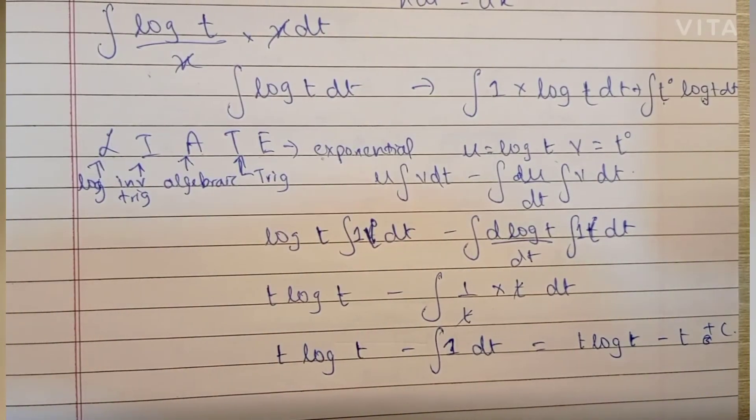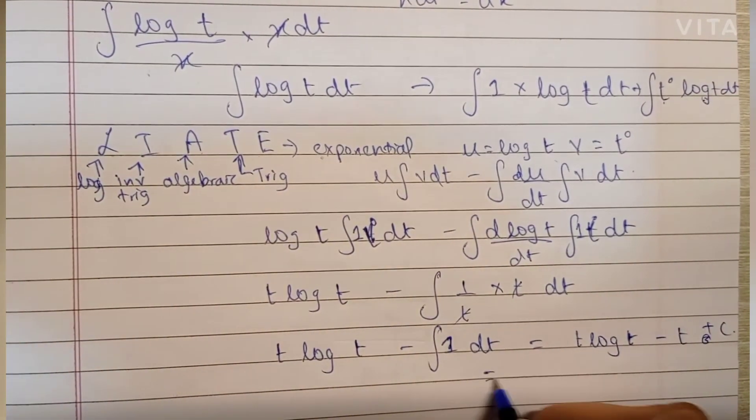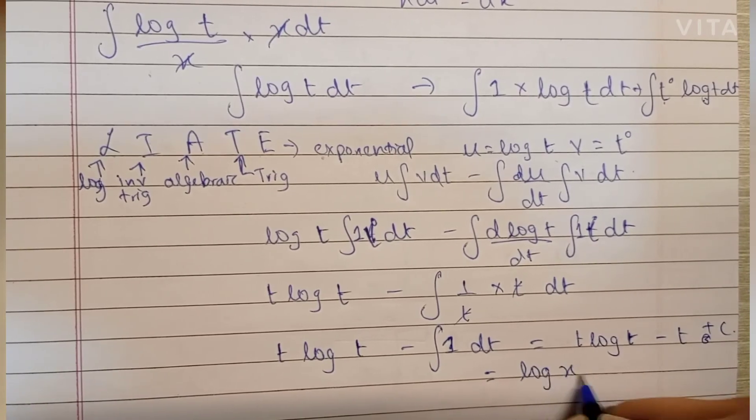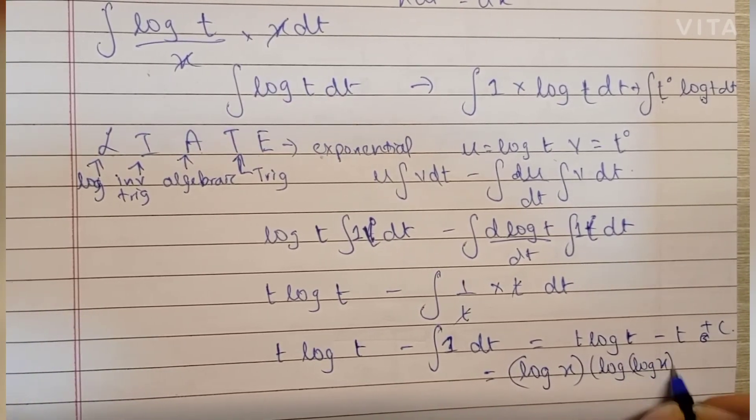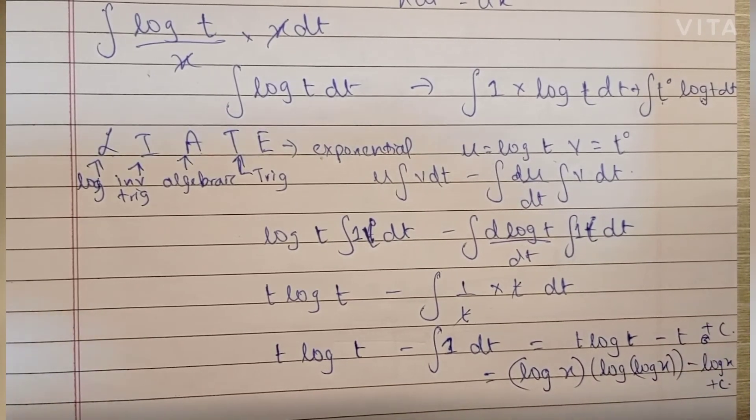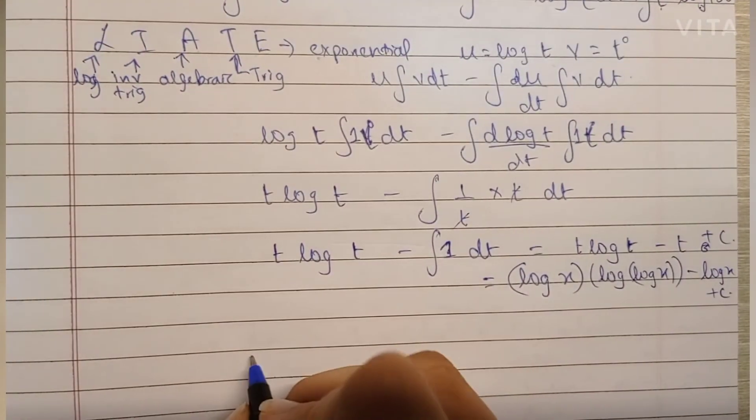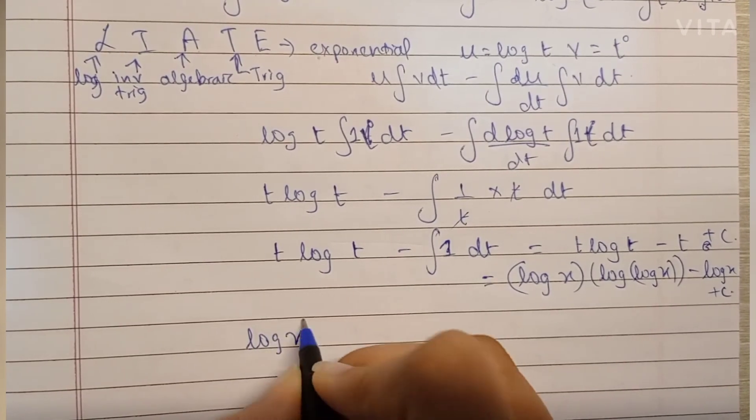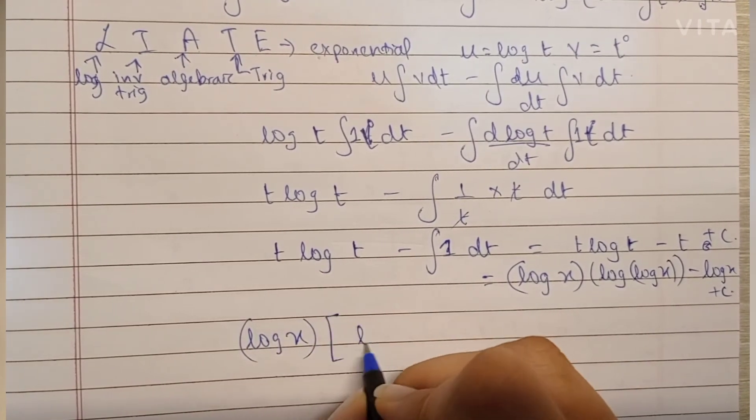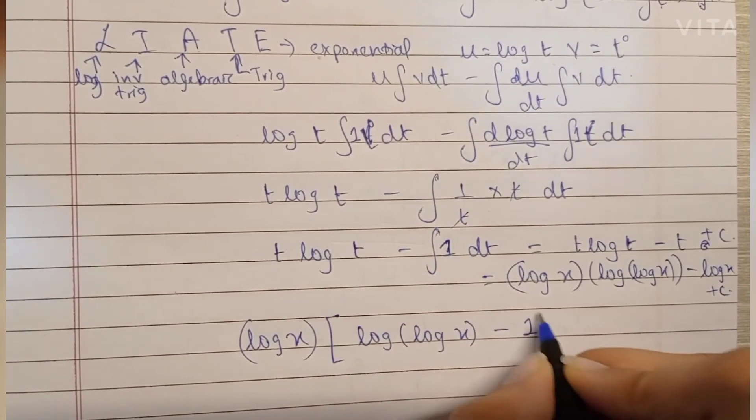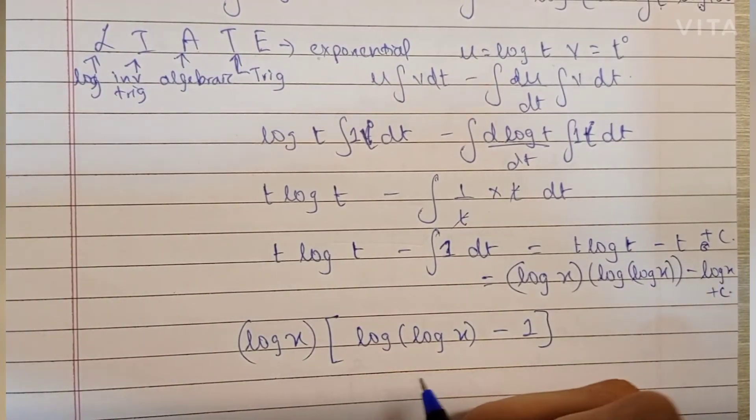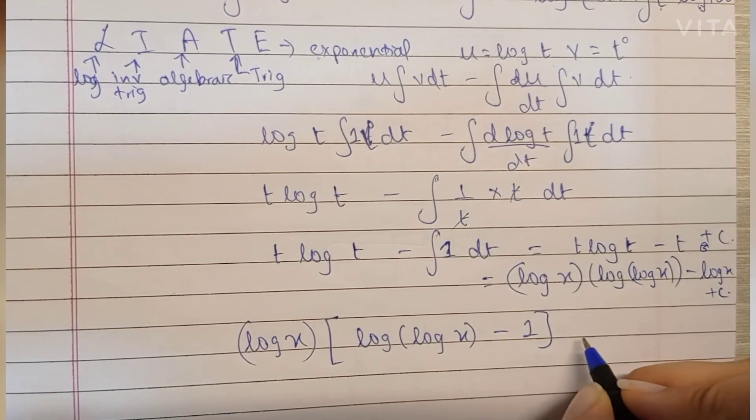Log of log x minus log x plus C. Let's write the final answer and take out log x common. We have log x into log of log x minus one, plus C. That's the final answer.